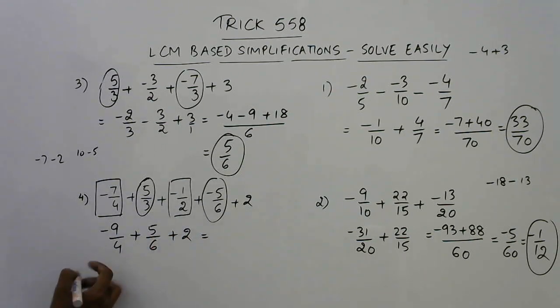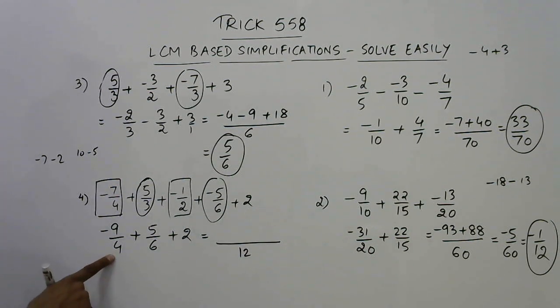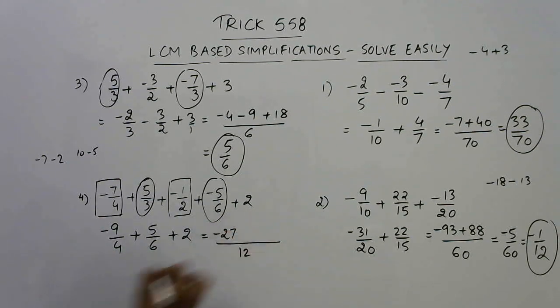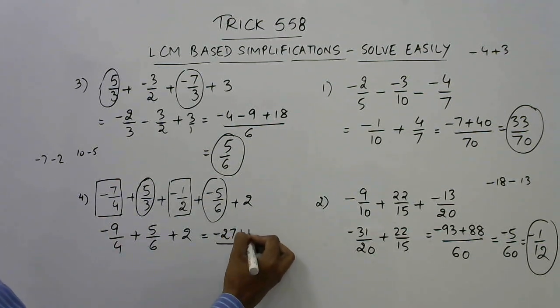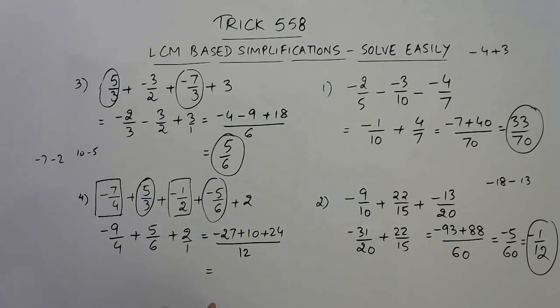Now, taking LCM will be very easy because 4 does not divide 6 but if you take multiples of 6, 6 to 12, 12 is divisible by 4. So LCM is 12. 12 divided by 4 is 3, so multiply this by 3, 27. 12 divided by 6 is 2, so multiply this by 2, 10 and finally, 12 divided by 1 is 12, multiply by 12 you have 24. Answer is in the next step 24 plus 10, 34 minus 27 is 7 upon 12. That is the final answer for this question.